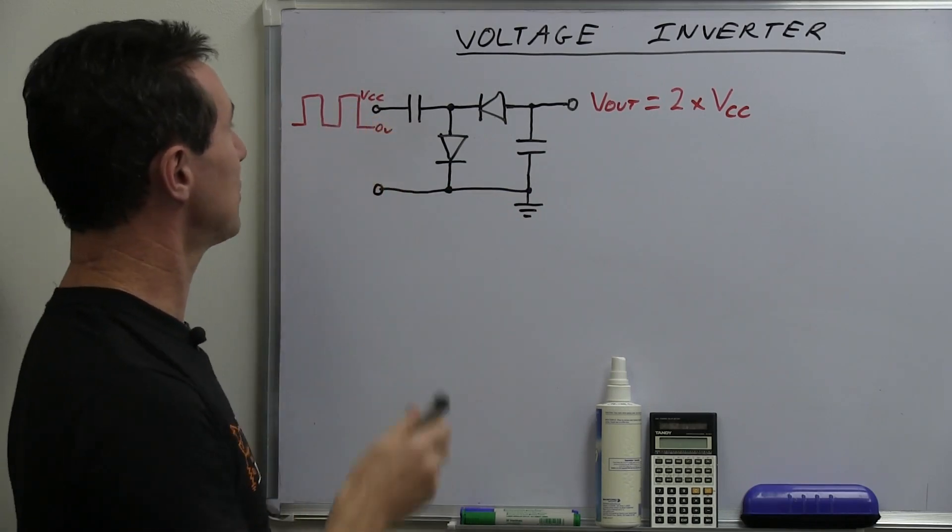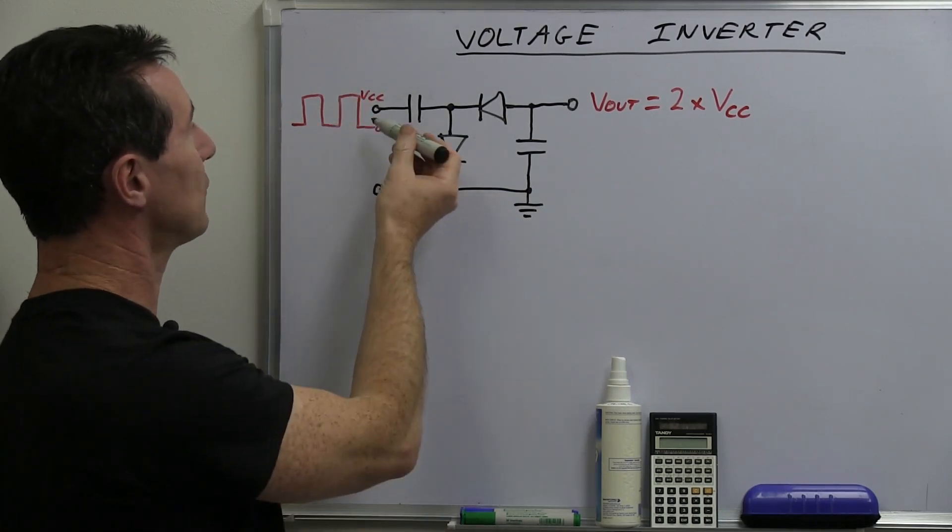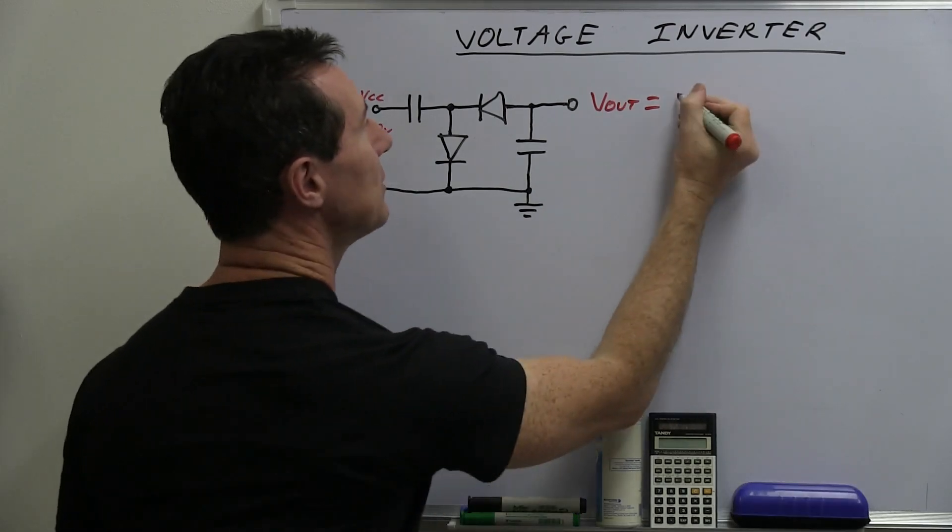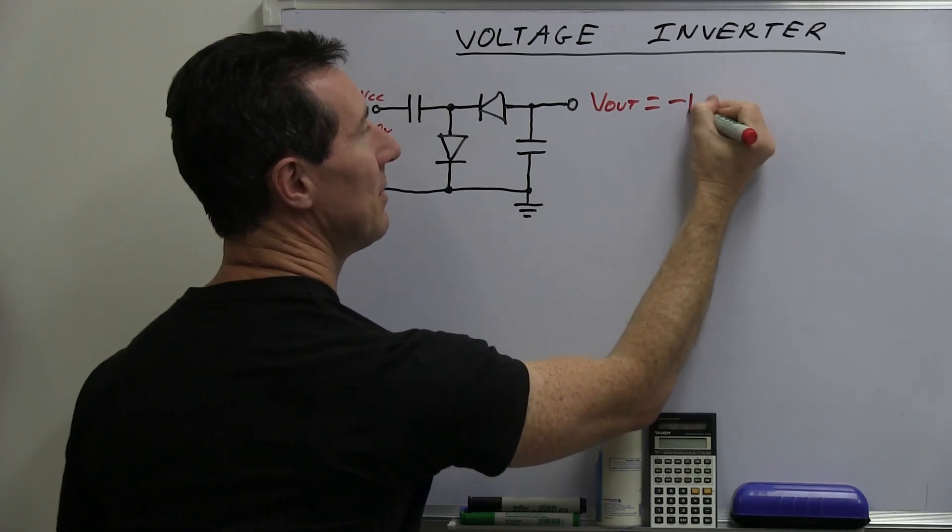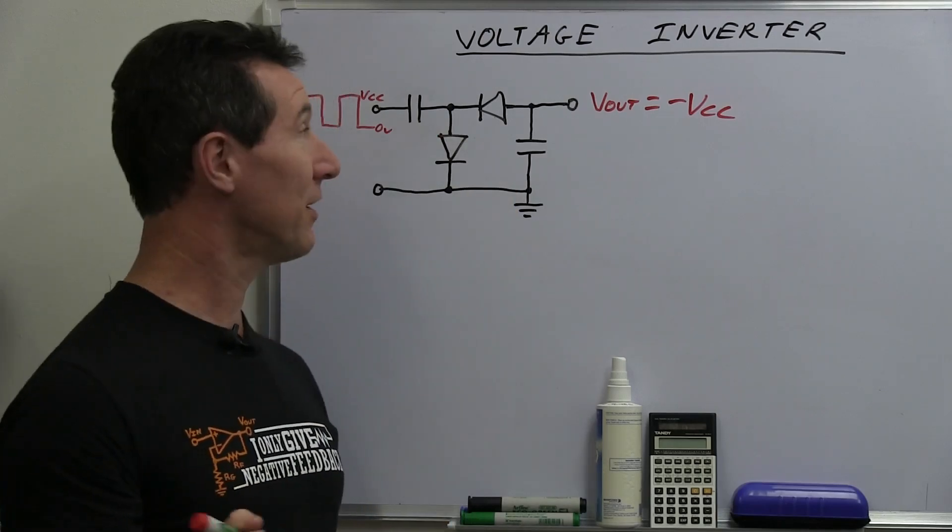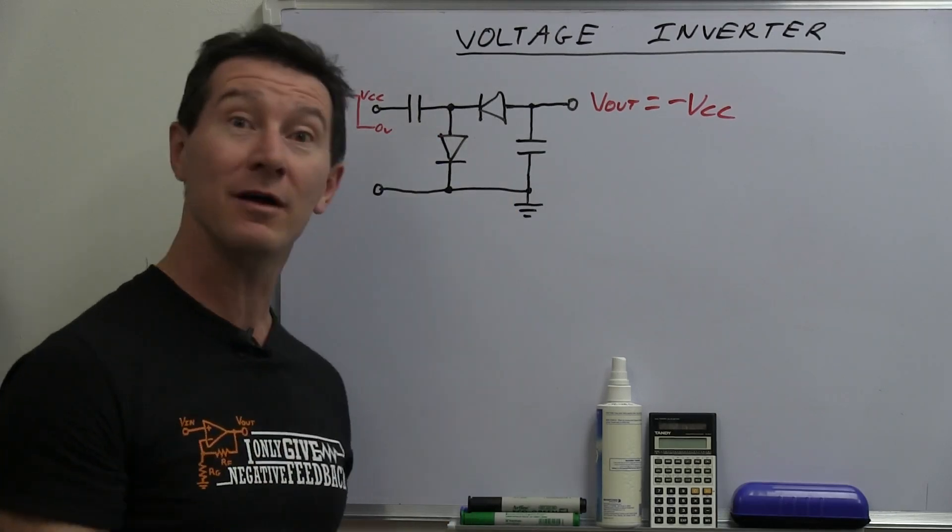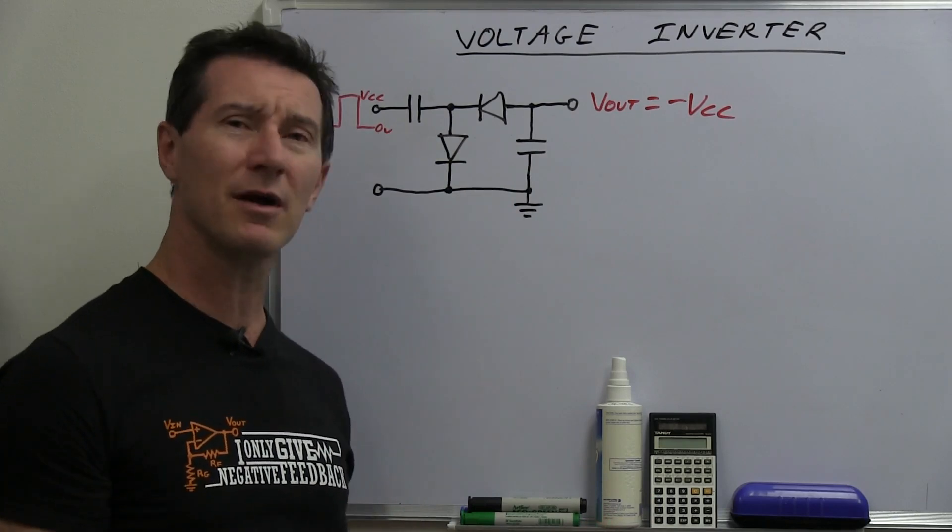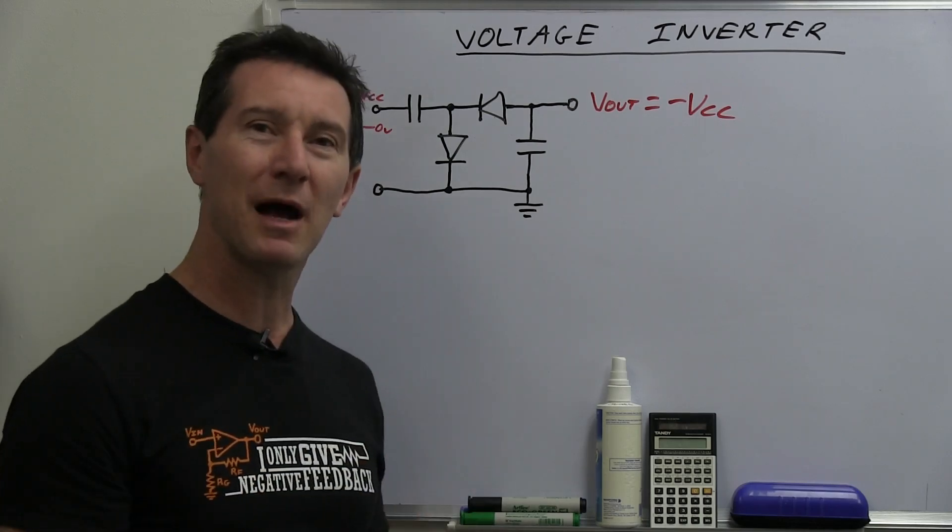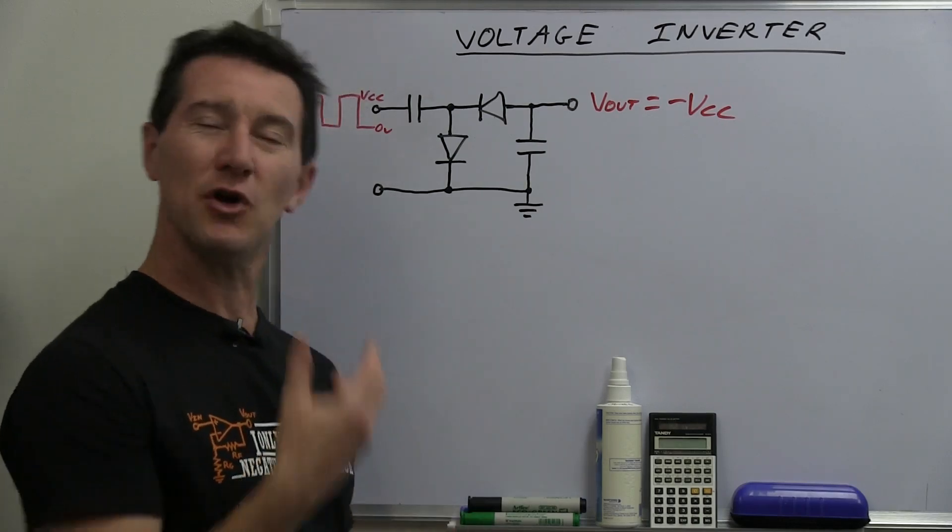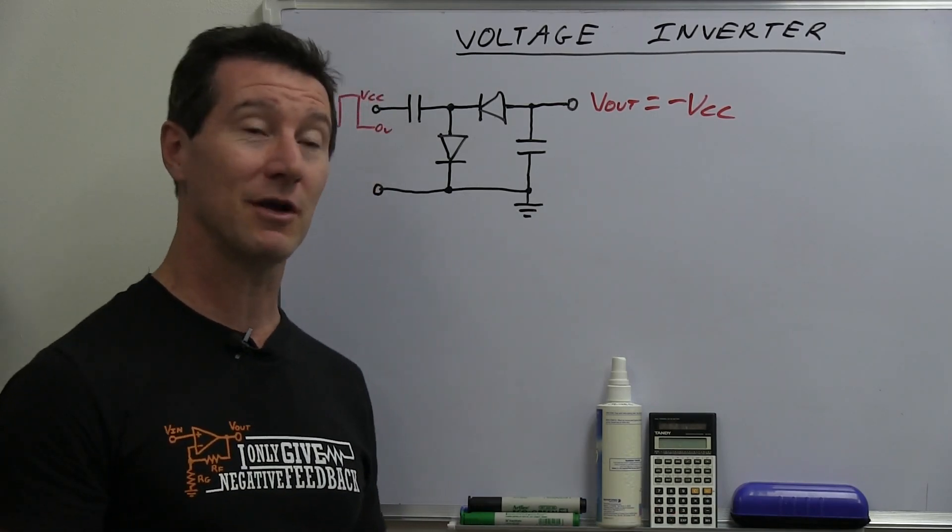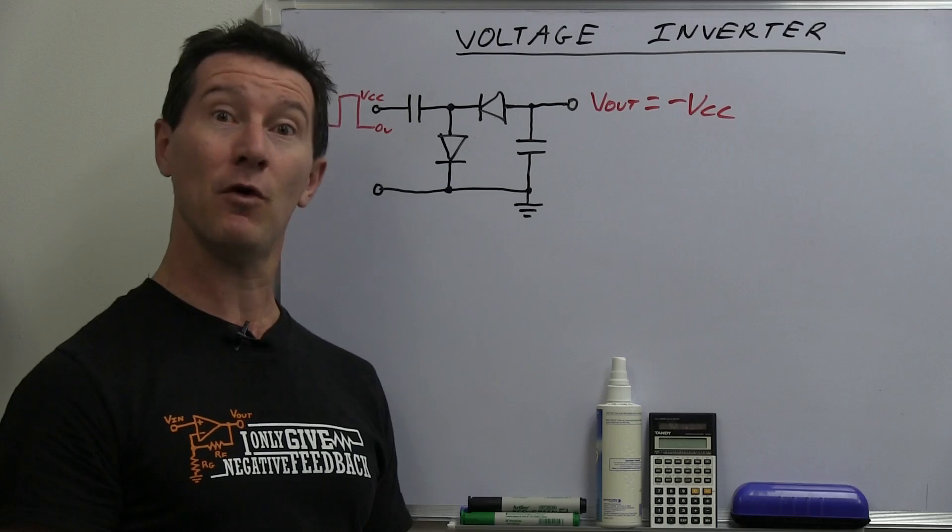We also have to get rid of VCC here. That's no longer VCC. That is ground. Like that. And bingo. We keep our signal from our square wave from our microcontroller there. It goes from 0 to VCC. And in this case, our output voltage Vout is going to be not doubled, it's going to be minus VCC. Once again, ideal case, assuming no diode losses. Bingo. That's our voltage inverter. That's all there is to it.